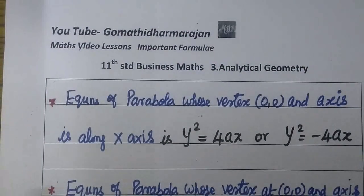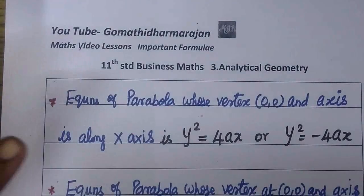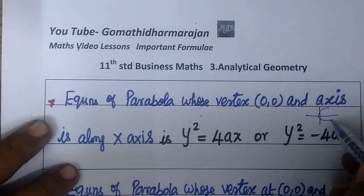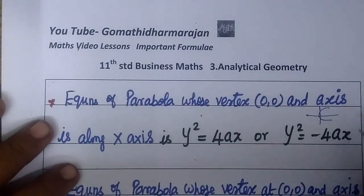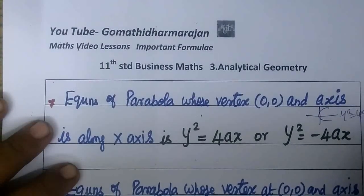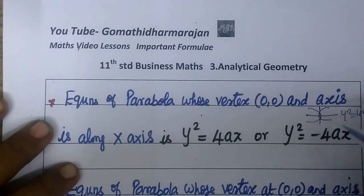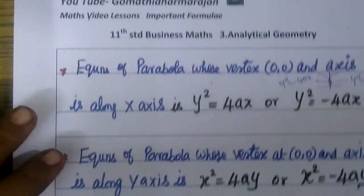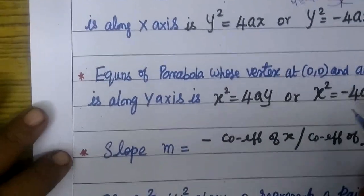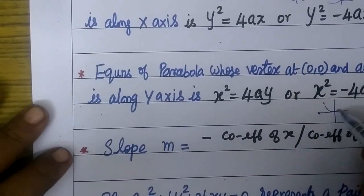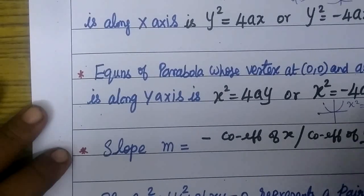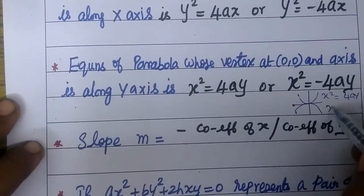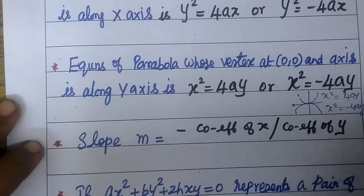Next, the equation of a parabola with vertex at (0,0) and axis along the x-axis: y squared equal to 4ax. If it opens in the opposite direction: y squared equal to minus 4ax. If symmetrical about the y-axis (opening upward): x squared equal to 4ay. If downward: x squared equal to minus 4ay.